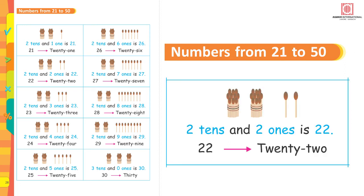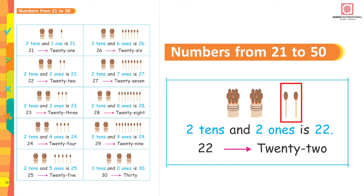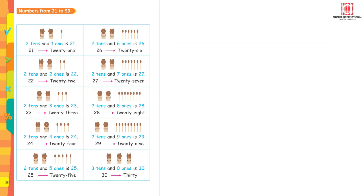In the next box there are two bundles of 10 matchsticks and two loose matchsticks. Two bundles equal 20, so two tens and two ones is 22. Similarly, look at the other examples given.